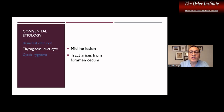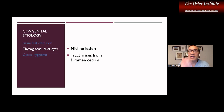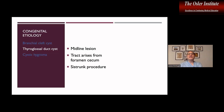What you'll see as a remnant of that thyroglossal duct in the existing thyroid of an adult is the pyramidal lobe of the thyroid, which is the remaining distal end of the thyroglossal duct. Along that tract is where the thyroglossal duct cyst can form. Typically in relationship to the hyoid bone, which leads to the definition of the procedure used to remove it — the Sistrunk procedure.